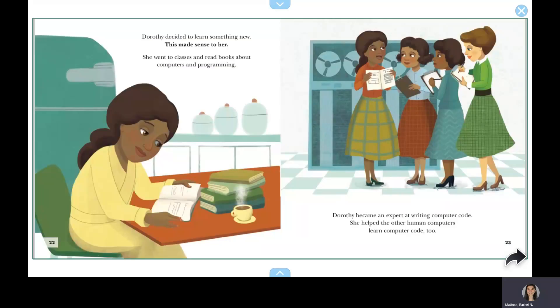Dorothy decided to learn something new. This made sense to her. She went to classes and read books about computers and programming. Dorothy became an expert at writing computer code. She helped the other human computers learn computer code too.